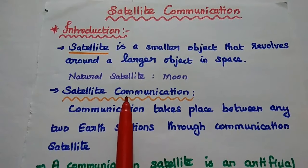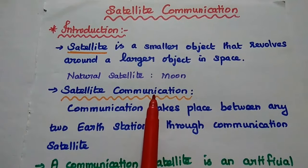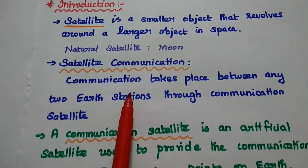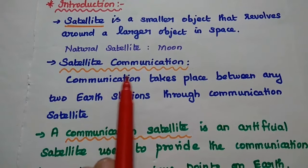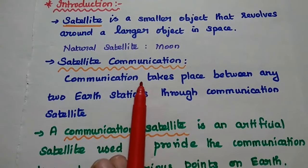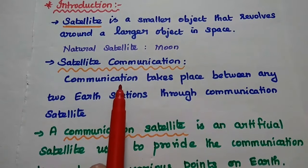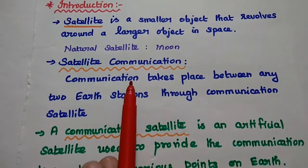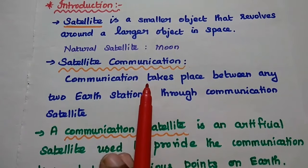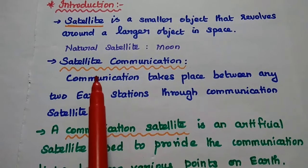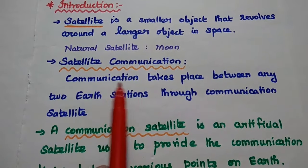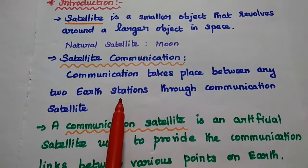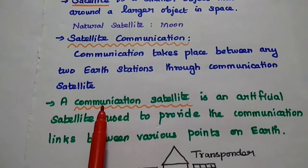Similarly, we can make artificial satellites for certain applications. Now we are going to discuss satellite communication. Satellite communication plays a vital role in the global telecommunication system. In this, the communication takes place between any two earth stations through a communication satellite.